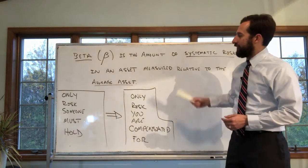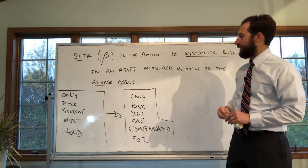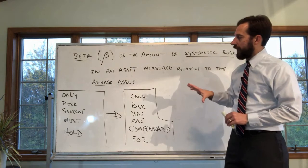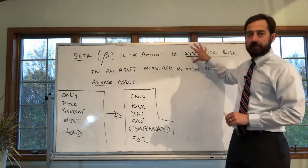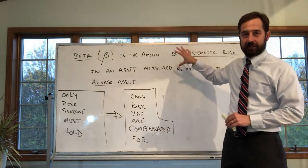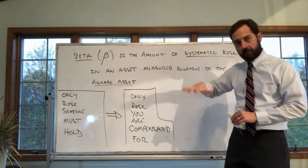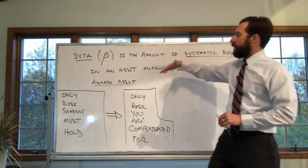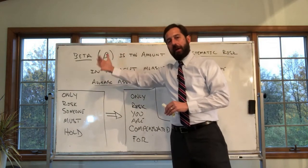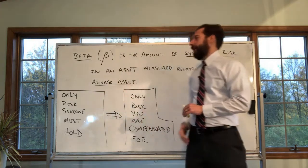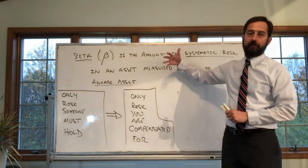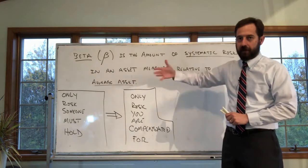Now, unpacking the rest of this, in an asset measured relative to the average asset, the important thing to get is that the amount of systematic risk is not the same in every asset. Some assets have more systematic risk, some have less. We would say the beta of Tesla is the amount of systematic risk in Tesla. We have specific betas for every asset, stock, bond, and so forth.